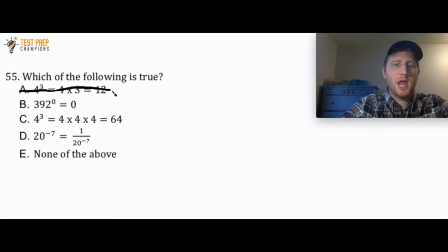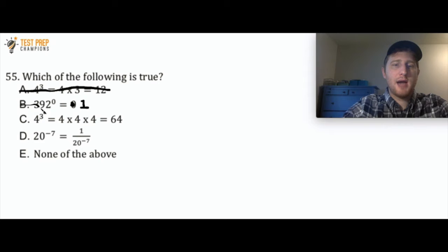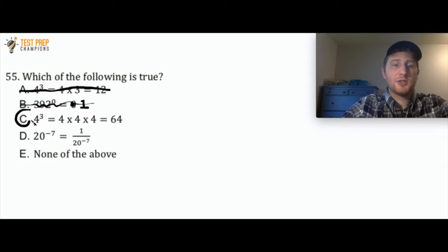What about B? 392 raised to the zero power. Well, anything raised to the zero power is going to be equal to 1. So B is also going to be false. C says 4 raised to the third power equals 4 times 4 times 4, which equals 64. So C is actually the correct answer here.